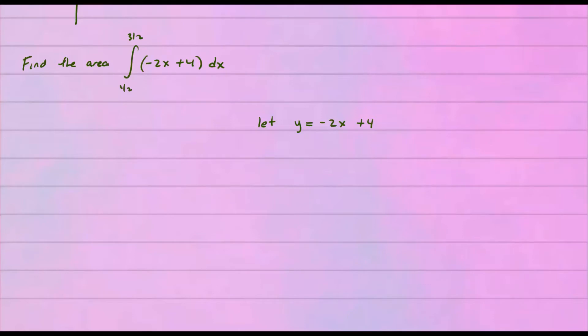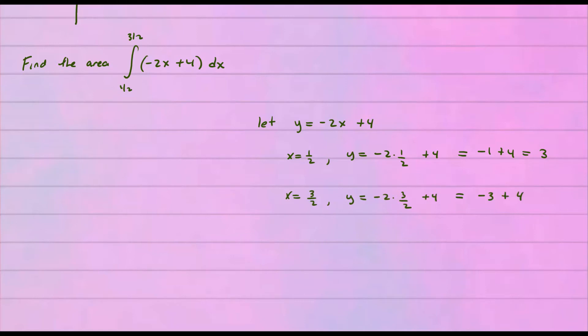Let's look at another example — say we want to find the area of this integral from one-half to three-halves of the function −2x + 4. This is a simpler function and simpler bounds. The previous one is a little more complicated when using the antiderivative, at least for now. Let's sketch it: let y equal −2x + 4. When x equals one-half, y is −2 times one-half plus 4, which is −1 + 4 = 3. And when x equals three-halves, y is −2 times three-halves plus 4, which is −3 + 4 = 1.